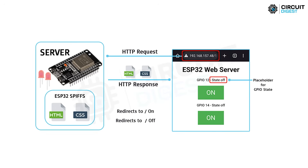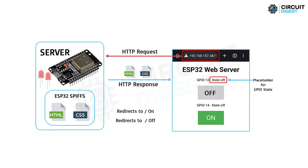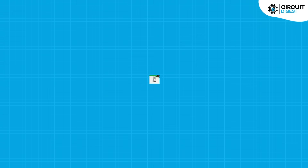But how does this project work? The ESP32 is connected to a Wi-Fi network — currently my phone's hotspot — allowing it to communicate with client devices over the network. When my phone connects to the ESP32's IP address, the web server code serves a web page to my phone's browser. The web page contains controls for the LED lights, allowing me to turn them on or off. When I interact with the controls, the ESP32 microcontroller receives the command, adjusts the LED accordingly, and sends a response back updating the web page with the current state of the LED lights.